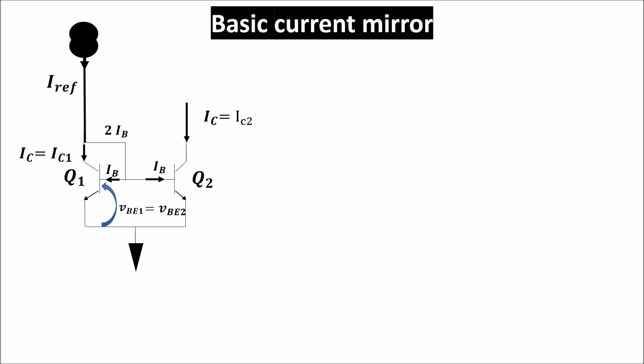This kind of configuration is more suitable for integrated circuits where we can control the process parameters and build the two BJTs as similar as possible. Only in this case, the V_BE voltage produces a collector current in Q2 equal to that in Q1, because I_S2 would be equal to I_S1.